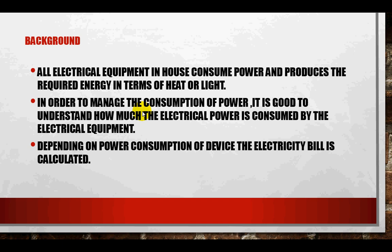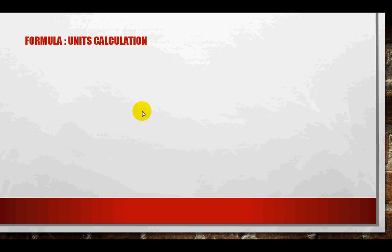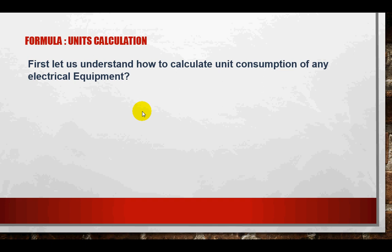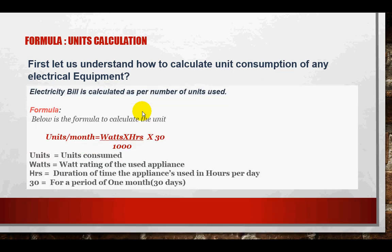So what is the formula for calculating the units? Let us first understand how to calculate the unit consumption of electrical equipment. Each electrical appliance in your house consumes units, and the total units are added up. The electrical bill is calculated as per the number of units consumed. Below is the formula which gives units per month.